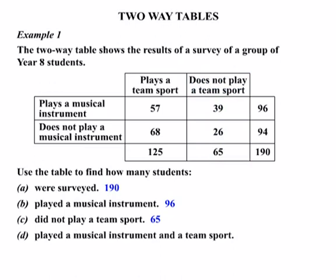In Part D, we need the number of students who played a musical instrument and a team sport. We look at the row for those who played a musical instrument and the column for those who play a team sport, then find the crossover number. There are 57 students who played the musical instrument and also played a team sport.